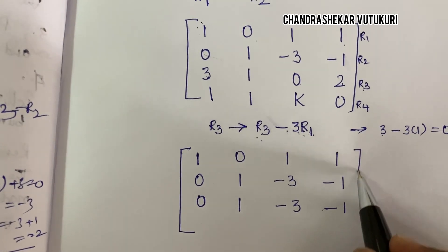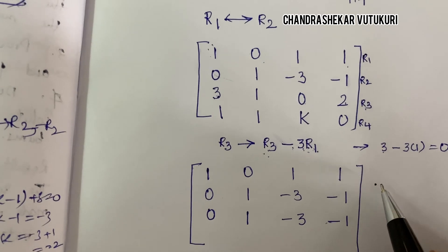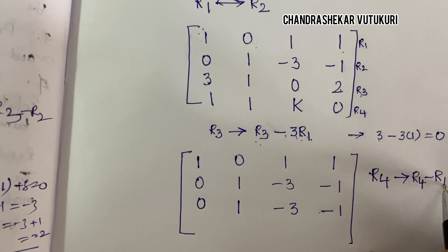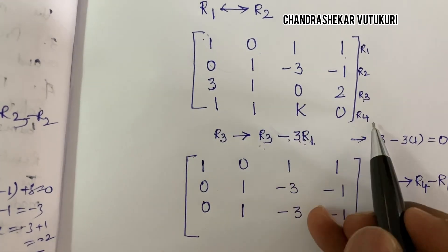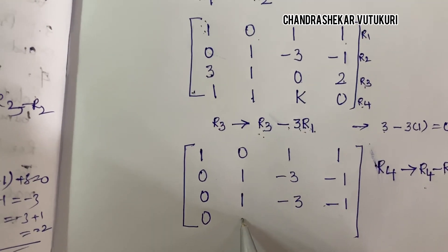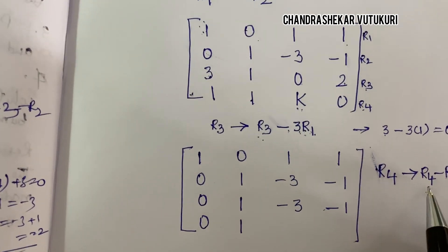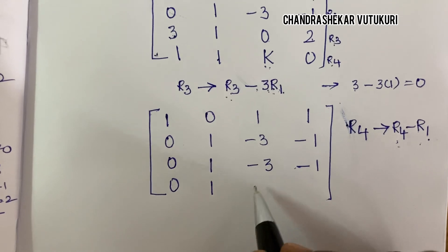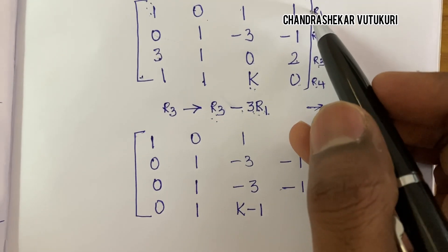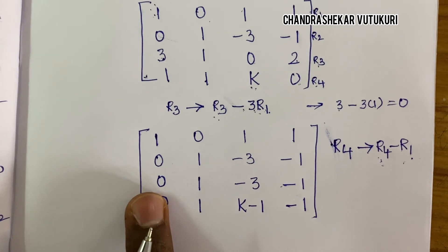Next, I apply R4 = R4 − R1 to make the first element of row 4 zero. Row 4's first element: 1 − 1 = 0. Second element: 1 − 0 = 1. Third element: K − 1, giving K − 1. Fourth element: 0 − 1 = −1. So the updated row 4 is: 0, 1, K−1, −1. We have now made the first column elements of rows 3 and 4 equal to zero.